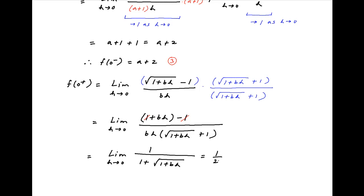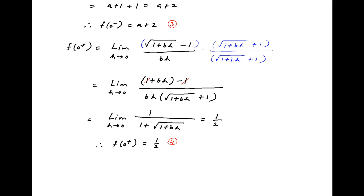The value of this limit is equal to 1/2. Therefore, the right-hand limit of f(x) at x = 0 is equal to 1/2. Let's call this result 4.